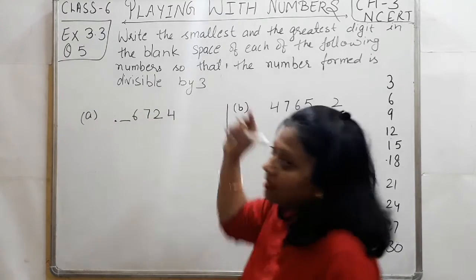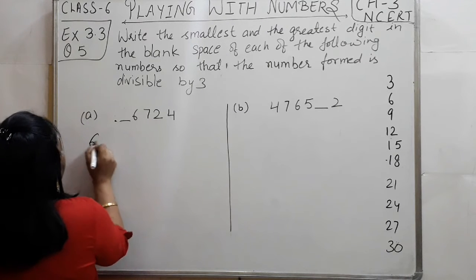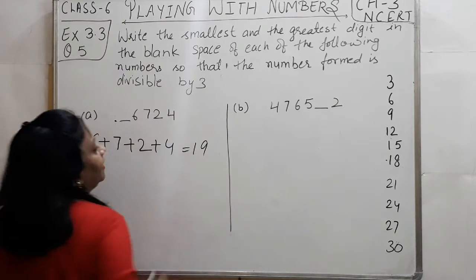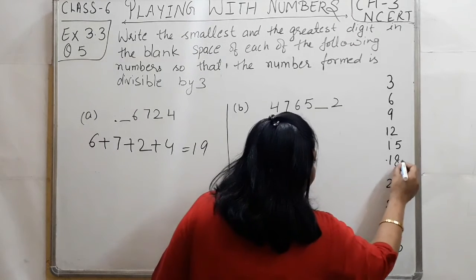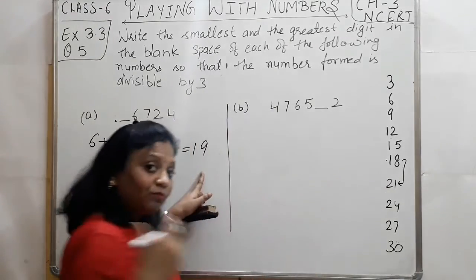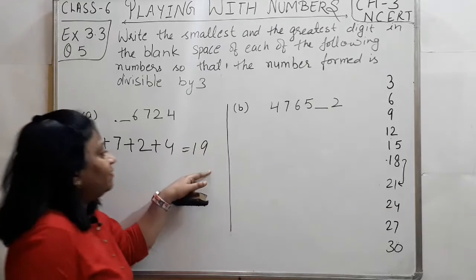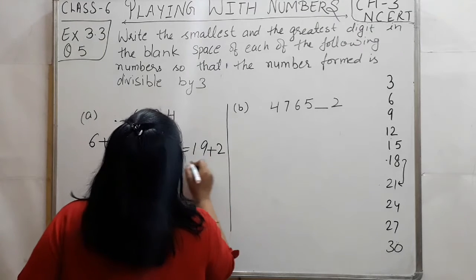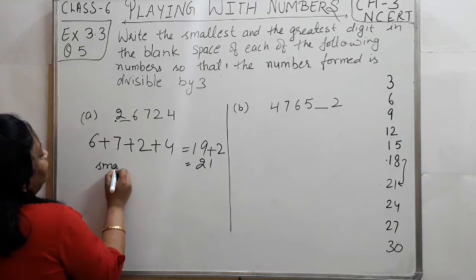We need to find both a smallest and a greatest digit. For the first number, adding the digits we get: plus 13, 15, 14 — and the sum comes to 19. Now 19 falls between 18 and 21 in the table of 3. Since we need the smallest digit, we check: 21 minus 19 equals 2. So the smallest digit is 2.